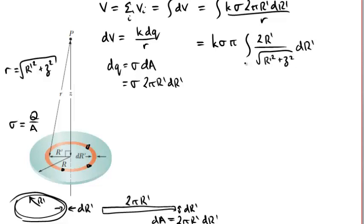And we might want to put some limits on our integral, it's a definite integral, going from r prime equals zero, from the centre of the disk, out to r prime equals capital R, the radius, the full radius of the disk.